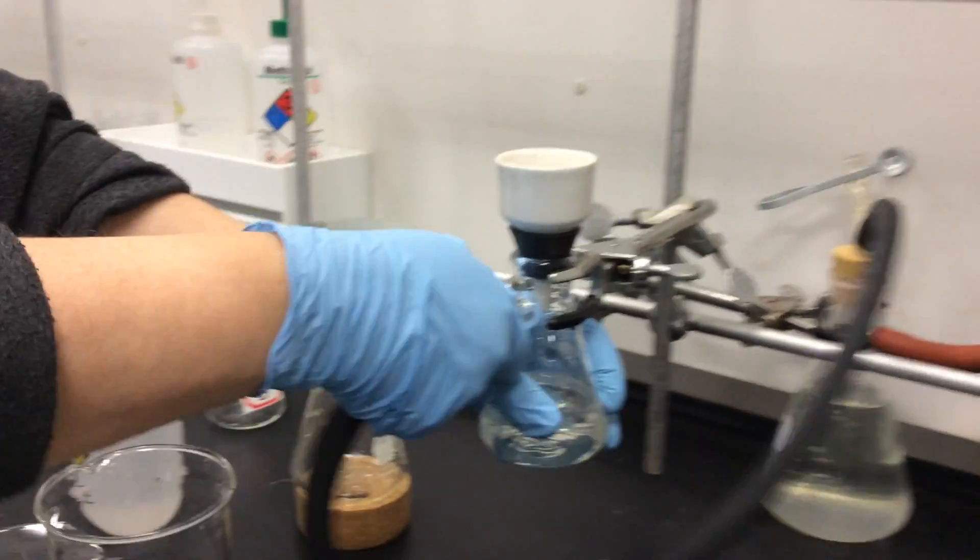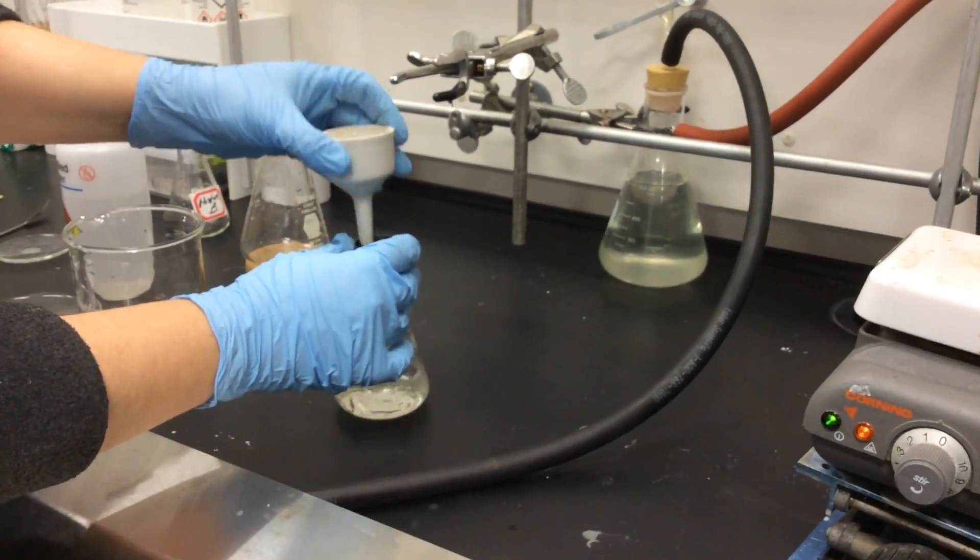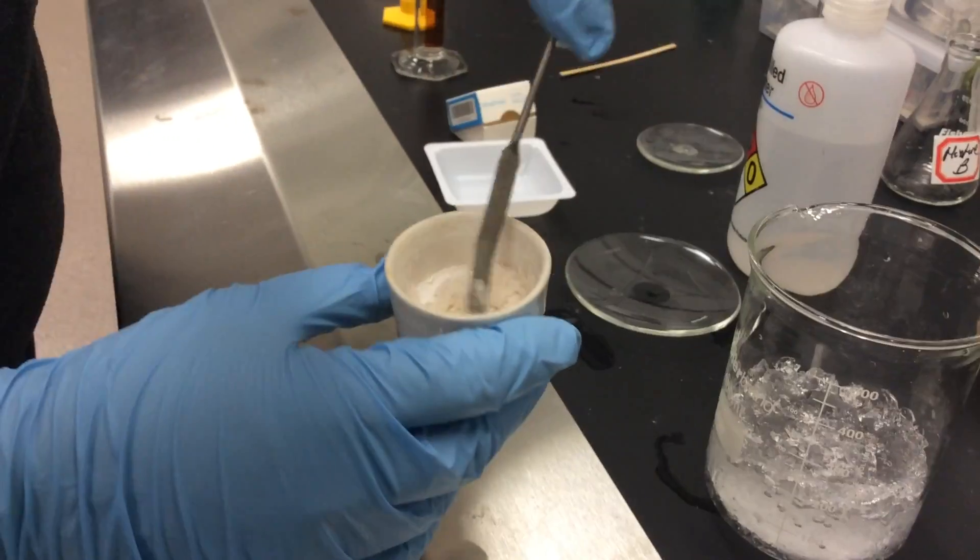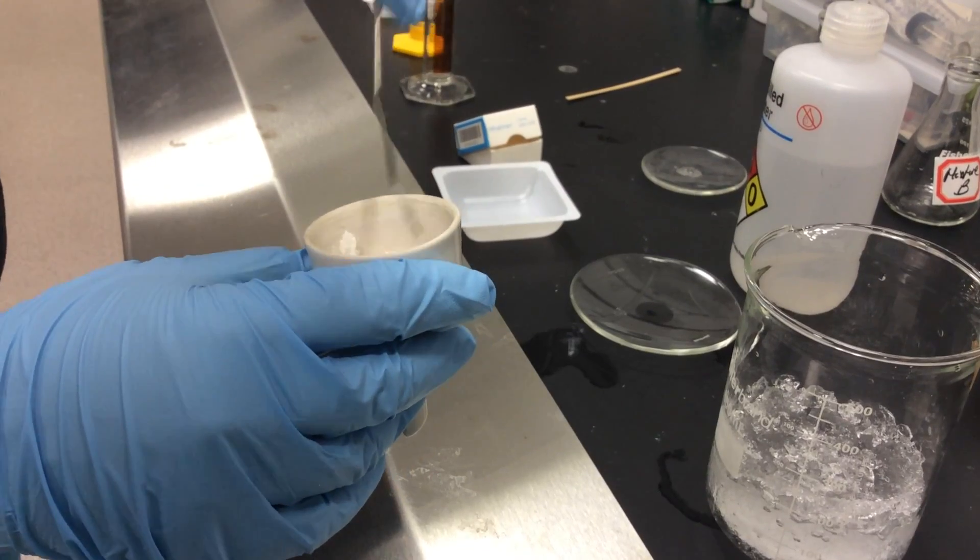Now we need to disassemble the vacuum filter, pull the aspirator, shut off the water, take the flask down, take the Buchner funnel out. Now we have pure crystals. As you can see, they're much nicer than the crude ones.